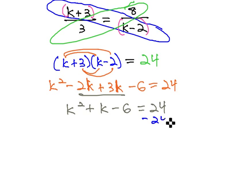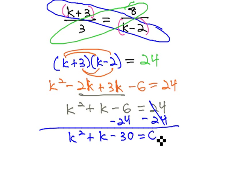Let's make the equation equal 0 by subtracting 24 from both sides. This gives us k squared plus k minus 30 equals 0.